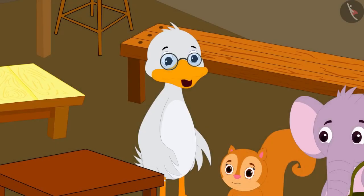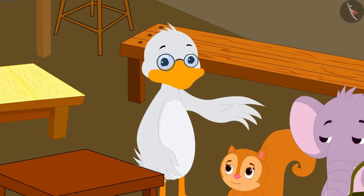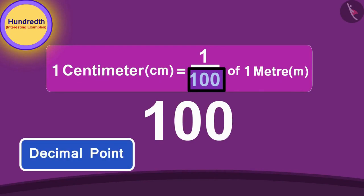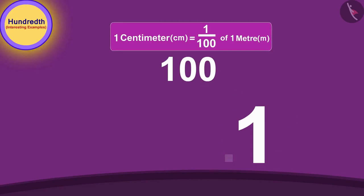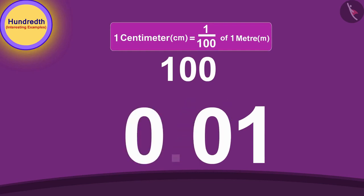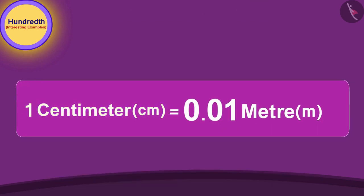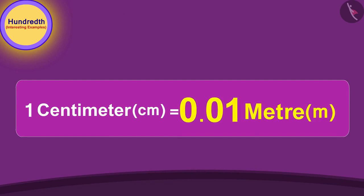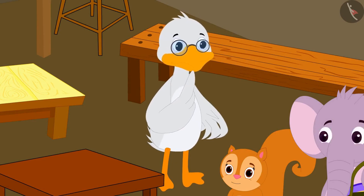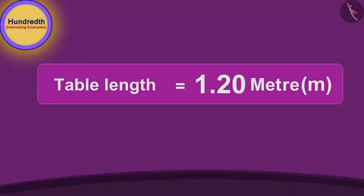Two zeros. Absolutely right. Now, it's very easy. We will move the decimal point twice to the left, starting from the end of the number. And, because this number only has one digit, we can add a zero on the left side. Then, slide the decimal point to the left for the second time. In this way, 1 centimeter becomes 0.01 meter. Uncle explained to Chanda. Now I understood, uncle. The length of this table is 1.20 meters.